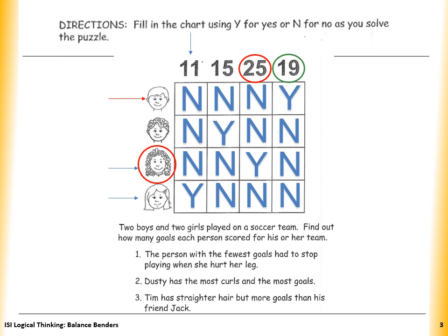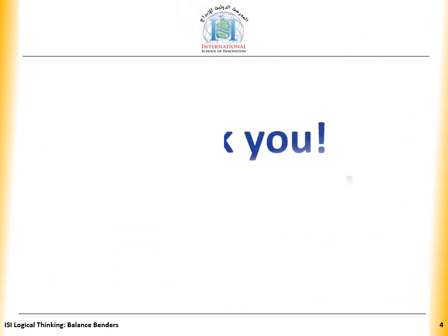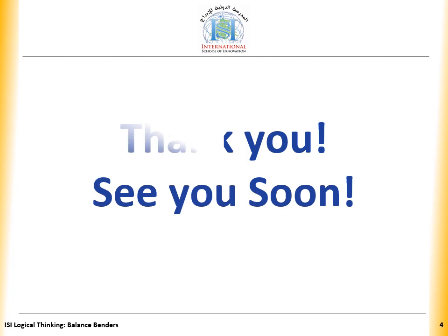We still have one missing box, which is for the curly-haired boy, who scored 15 goals. We put Y there. And that's it. Thank you.